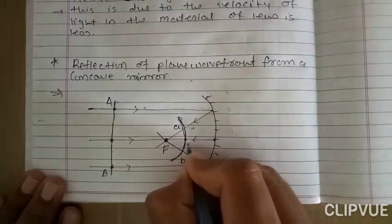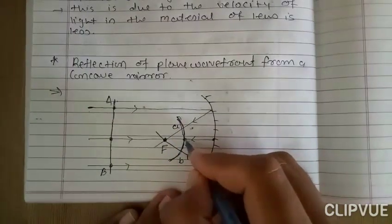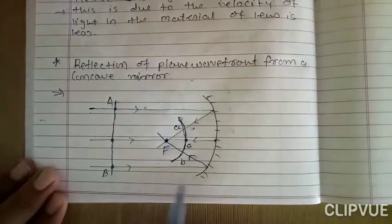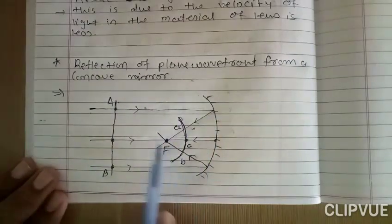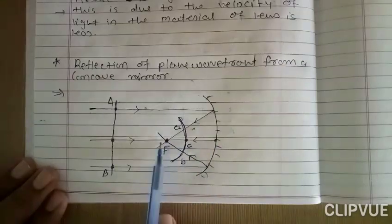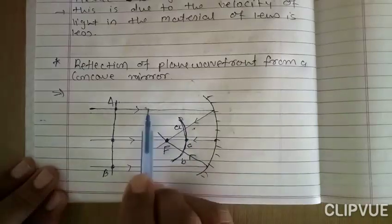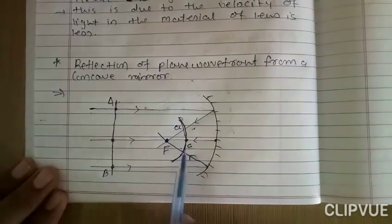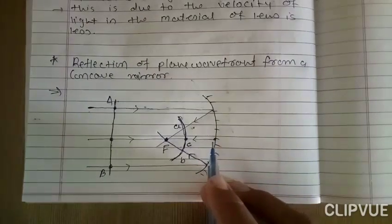Now consider point C. From the figure we can say that here the point C is behind point AB. The first ray travels some more distance as compared to the second. Due to this, point C is behind point AB. This is the reflection of a plane wavefront.